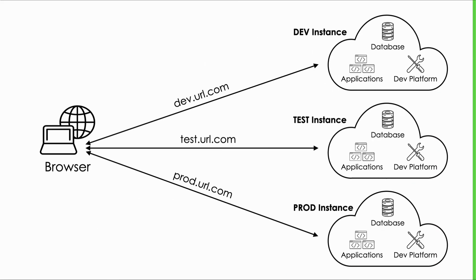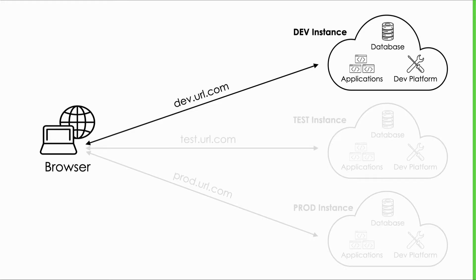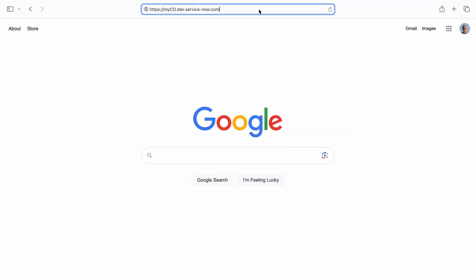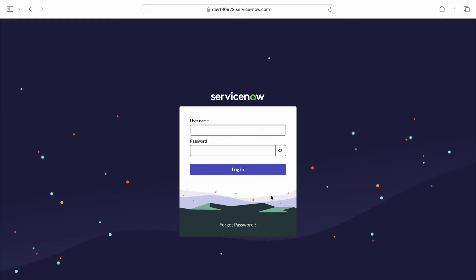When we log into ServiceNow, what we're actually logging into is a particular instance of the platform — let's say our development instance, for example. To do that, we enter the URL of the instance in the browser and we're presented with a login screen. This introduces the second thing that needs to be set up before you can access the platform: before you can log in as a user, someone has to tell the instance who you are and what you want.